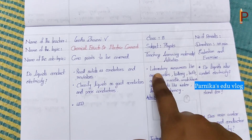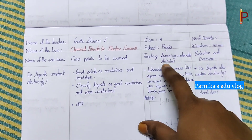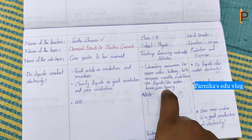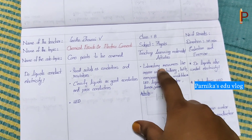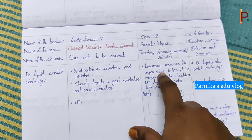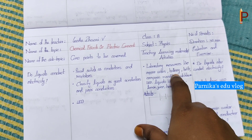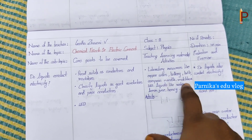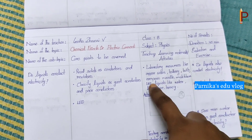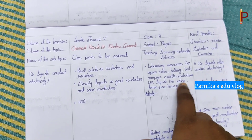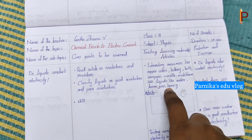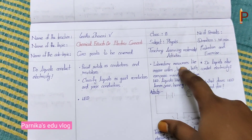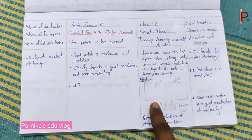Next column is teaching learning materials or activities. In this column, we have to mention what materials are required to conduct activities. Laboratory resources like copper wire, battery, bulb, compass needle, matchbox, LED, and liquids like water, lemon juice, and honey. These are the materials required.